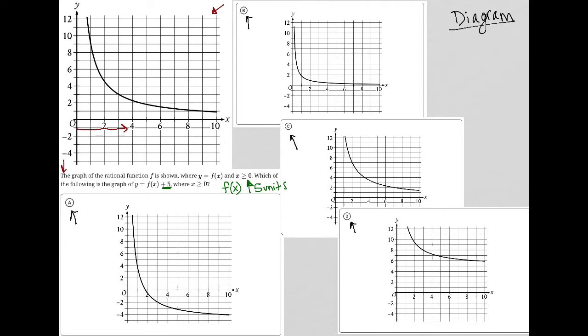So I should be able to just choose some points on my f of x graph. Let's say this point's a good one because it looks like it goes right through where the point 1 on the x and 9 on the y, right where those two lines intersect on our graph. So I'd have that point 1 comma 9. If I were to shift that particular point up 5 units, I should have the point 1 comma 14.